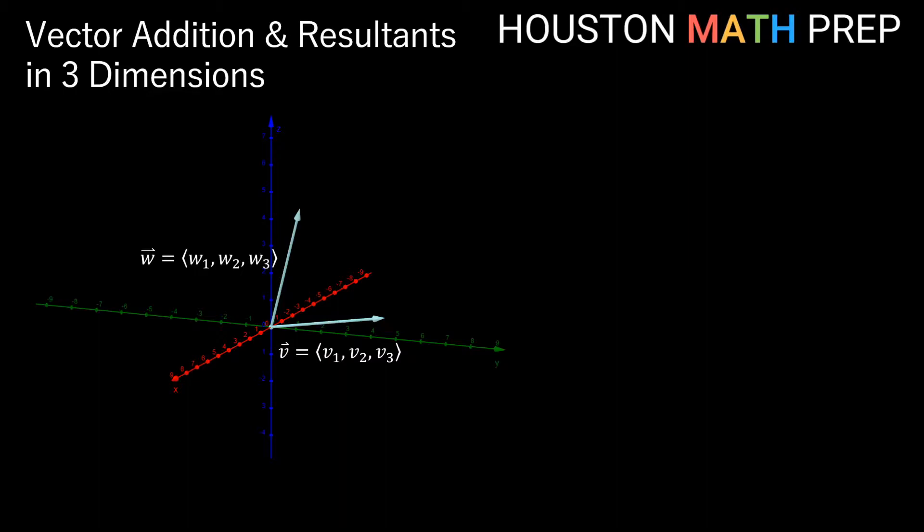When we do vector addition, in other words something like V plus W, remember that's the idea of traveling vector V and then traveling vector W. So what we'll do here is actually move the initial point of our vector W to the end of vector V.